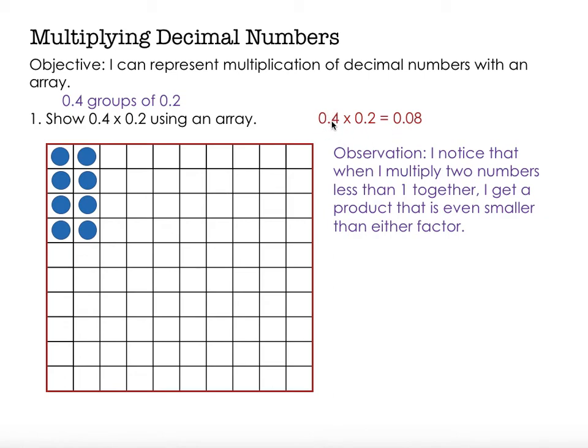But it's not quite half, it's a little less. So we're getting a product that's a little less than one tenth. We get eight hundredths as our product.